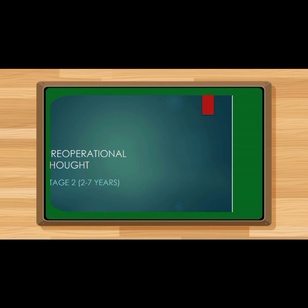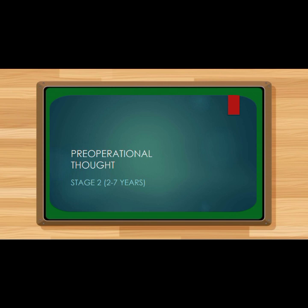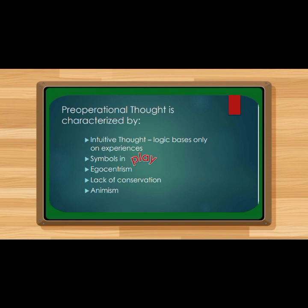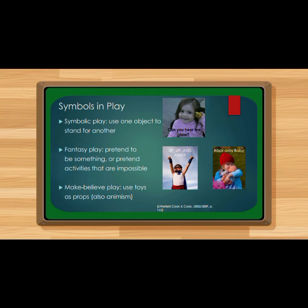The next stage under Piaget's stages of cognitive development is the pre-operational stage, covering from about two to seven years old. Pre-operational thought is characterized by intuitive thought — where logic is based only on experiences — symbols in play, egocentrism, lack of conservation, and animism. The first characteristic under the pre-operational stage is symbolic function.